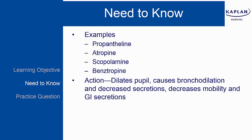They decrease GI motility, decrease gastric secretory activity, and increase esophageal sphincter tone. They can increase the heart rate or create tachycardia. In addition, atropine, propanthelene, and scopolamine are considered antimuscarinic. They inhibit the action of acetylcholine at sites innervated by postganglionic cholinergic nerves.